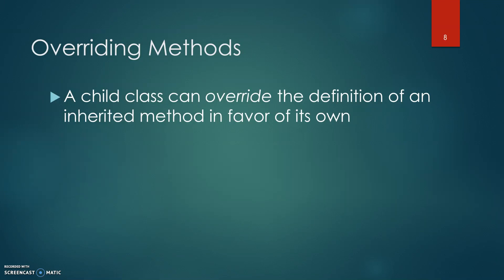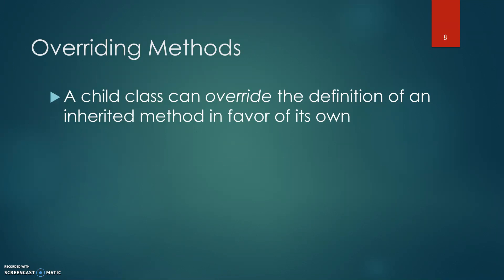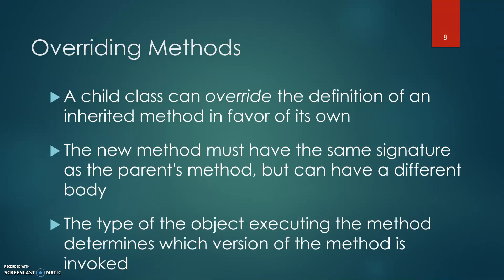A child class can override the definition of an inherited method in favor of its own. The new method must have the same signature as the parent's method, but can have a different body. The type of the object executing the method determines which version of the method is invoked.